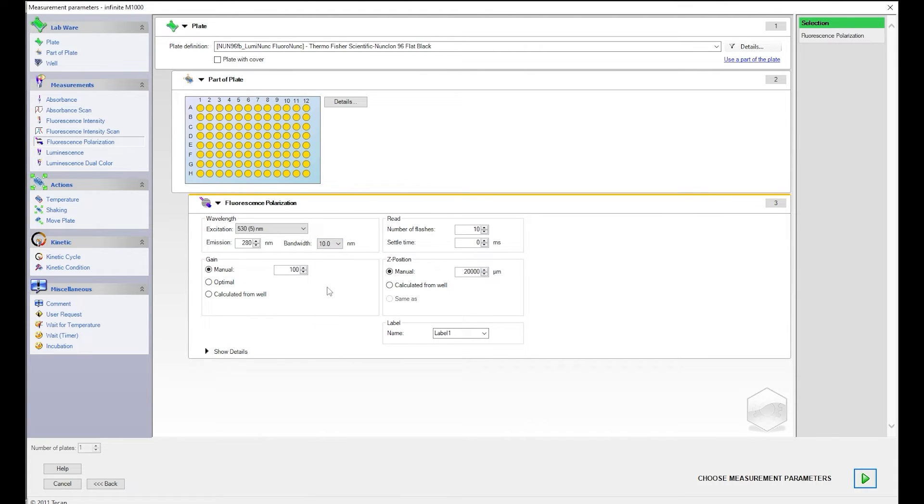Under Gain, select Optimal. Under Read, select your number of flashes. We recommend 10. Under Settle Time, select your time. We recommend 500 milliseconds. For Z-Position, select Manual. We recommend a value of 20,000 micrometers.